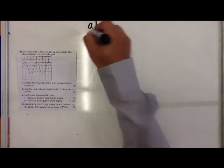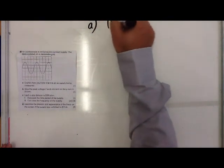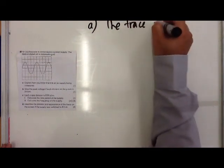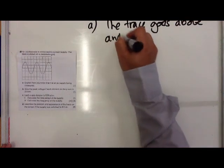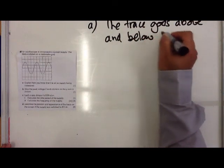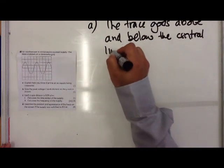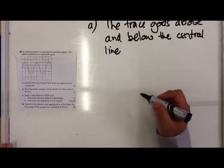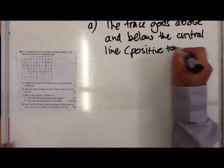So in answer to question (a), where it asks how you know that it is an AC supply—how you know that it is an alternating current supply—we would say that the trace goes above and below the central line. You can also add that it goes, in other words, from positive to negative.